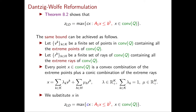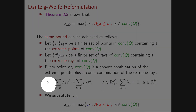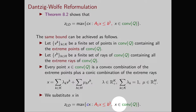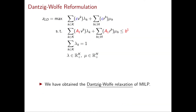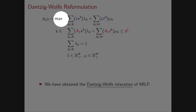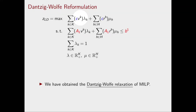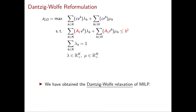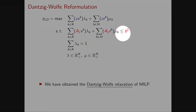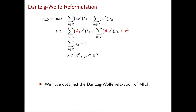To obtain the Dantzig-Wolfe reformulation we substitute x in the Lagrangian dual formula: we replace x in the objective function and in the constraints, and we replace the constraint x ∈ conv(Q) with the convex and conic combination constraints just introduced. Doing this, z_LD is the maximum of the resulting objective function, subject to the red constraints with x replaced by the new formula, plus the convex and conic combination constraints. This is the definition of the Dantzig-Wolfe relaxation.